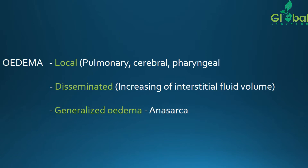Increasing of interstitial fluid volume is the major cause of disseminated edema — fluid accumulates in the interstitial space and spreads. The other category is generalized edema, where throughout the body there will be swelling. Clinically we use the term anasarca for this condition. In anasarca, edema is present throughout the body — upper limb, lower limb, trunk, joints — with no specific region spared.